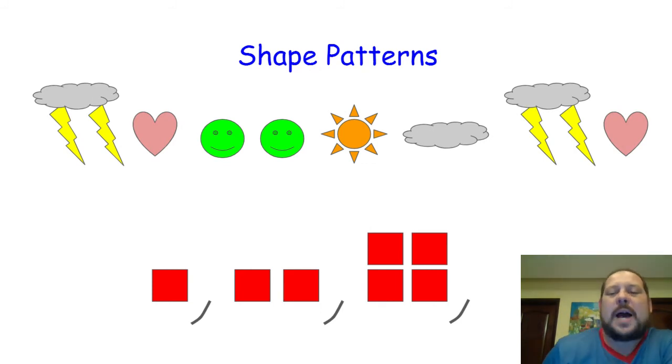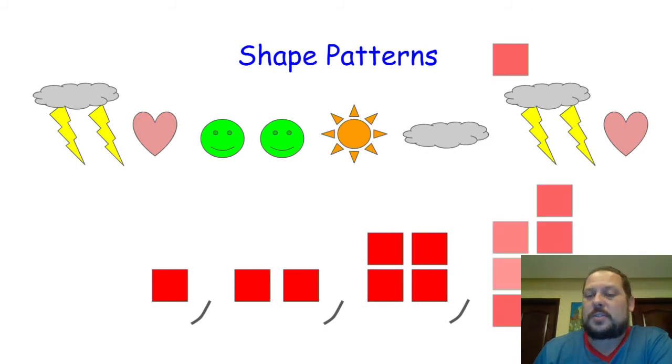If we look at the bottom, we have starting off with one red square and then that changes to two red squares and it changes to four red squares. What is the pattern that we notice? You might notice that one times two is two squares and then two squares times two is four squares. And if we repeat that, four times two is eight squares. Very good.